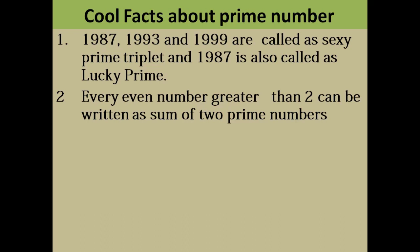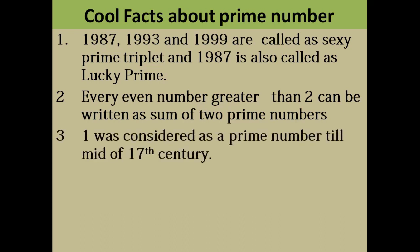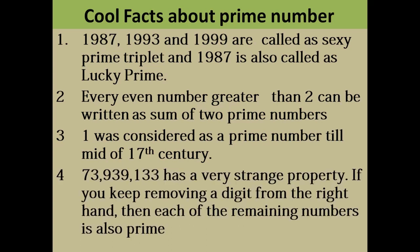So whether it is 6 — that is 3 plus 3 — or 8 — that is 3 plus 5 — and so on. Also, 1 was considered a prime number until the mid-17th century, but now 1 is neither a prime number nor a composite number.